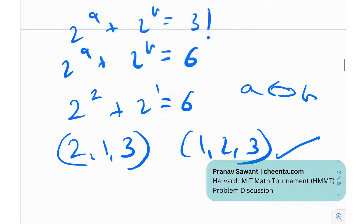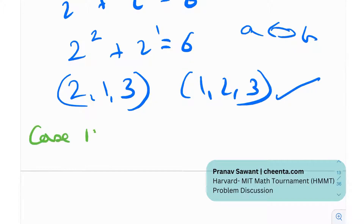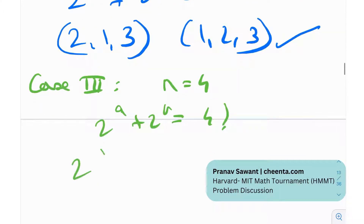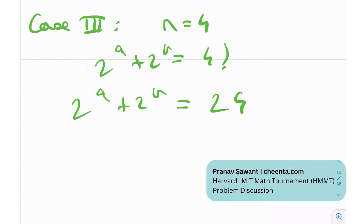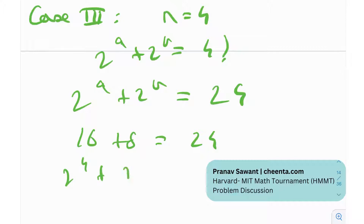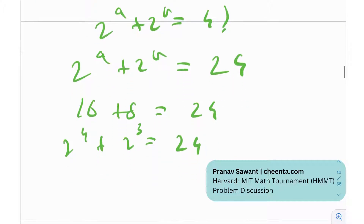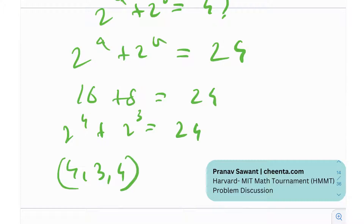Case 3: n = 4. Then 2^a + 2^b = 4! = 24. We can write 24 = 16 + 8 = 2^4 + 2^3. So the solutions are (a, b, n) = (4, 3, 4) and (3, 4, 4). Again, accounting for symmetry gives us two solutions for this case.